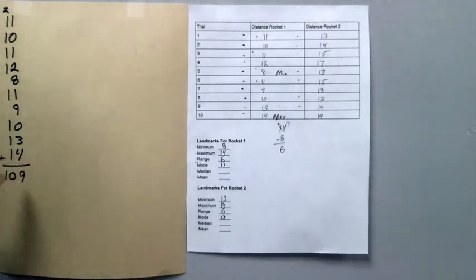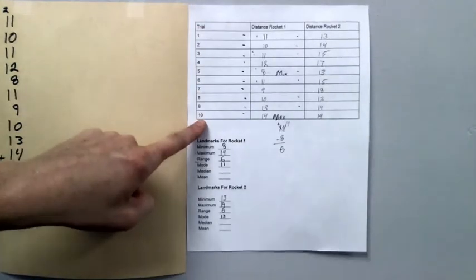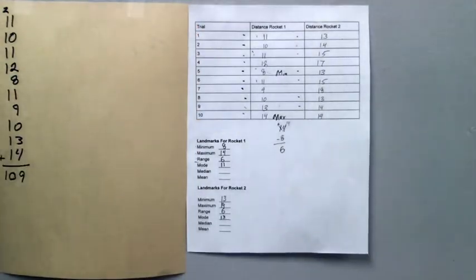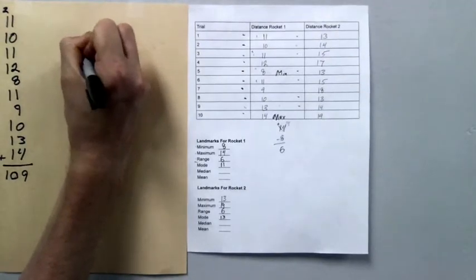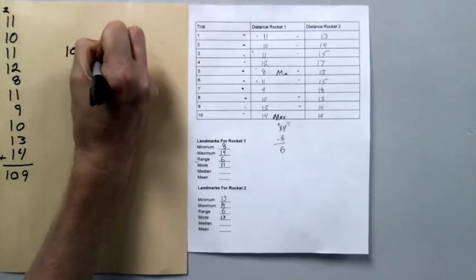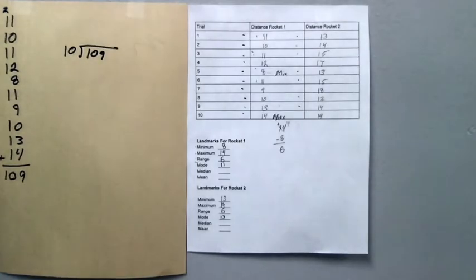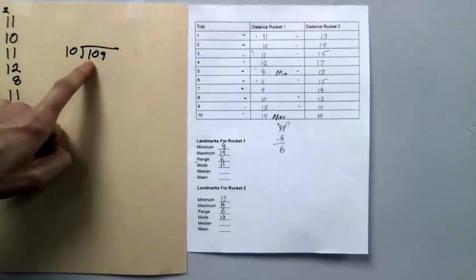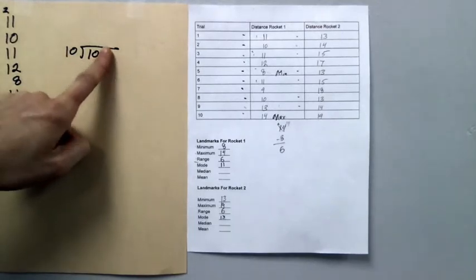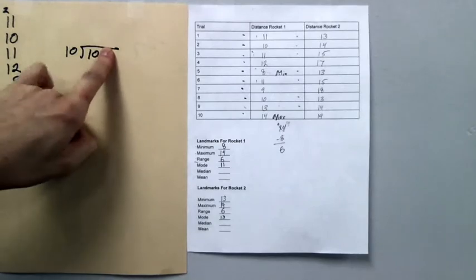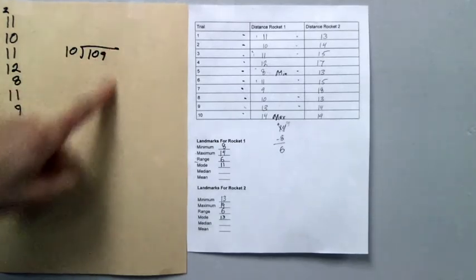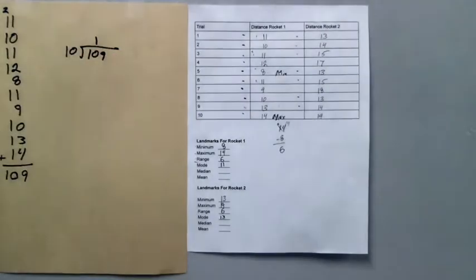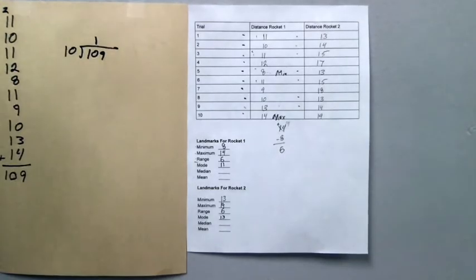So I have 109 total, and I need to divide that by 10, not because it's a convenient number, but because that was the amount of rocket flights I had. So I will set it up like a traditional long division problem. And I'm going to start dividing. How many groups of 10 can I make in 1? Well, I can't. So I'll move over and access a second place value. How many groups of 10 can I make in a group of 10? Well, just 1. And I make sure that I put my 1 over that 0, because I needed the 0 to make a number big enough to pull a group of 10 out of it.